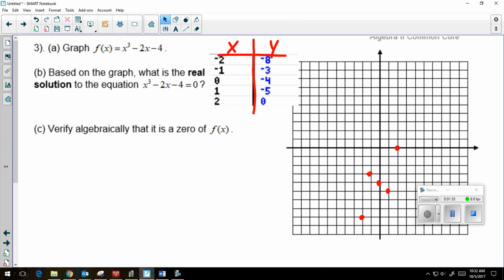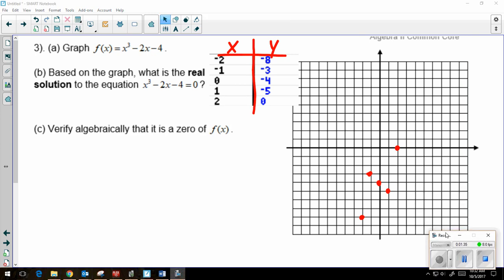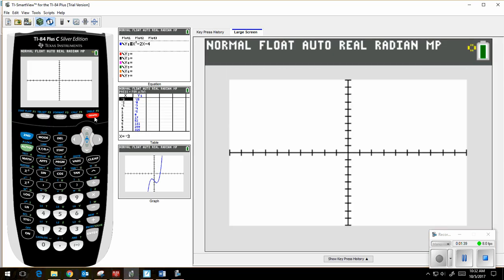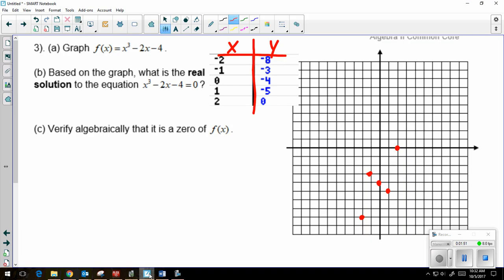And then what I want to do is before I just connect my dots randomly, I want to go back to my calculator and take a look at that graph to see what it should look like. And I want to make sure that when I connect on my paper, on my graph, it looks similar to what's being shown on the calculator. And then I'm going to label it with f of x.